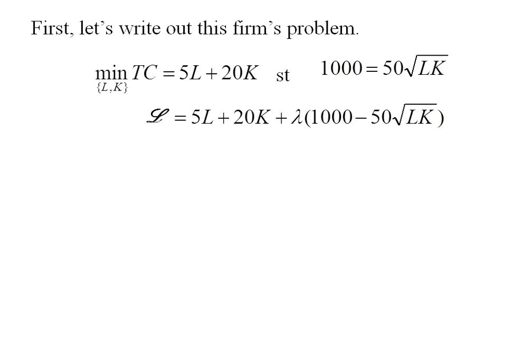Writing out the Lagrangian, we first write in the objective function, and then we write the constraint, but with a lambda times it. Now we take the partial derivative with respect to labor, then capital, then lambda.